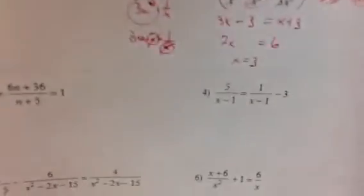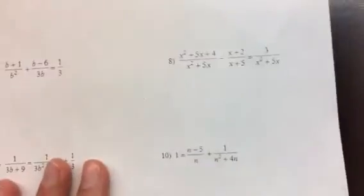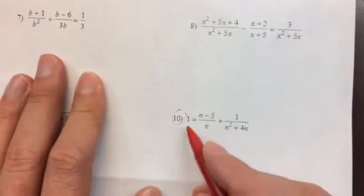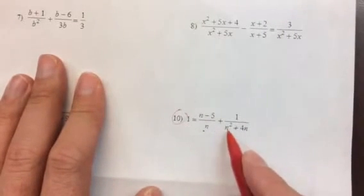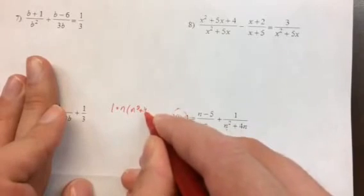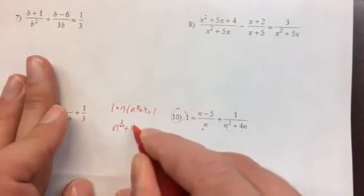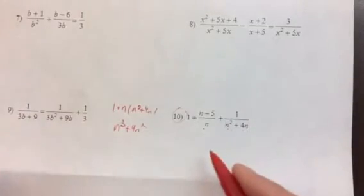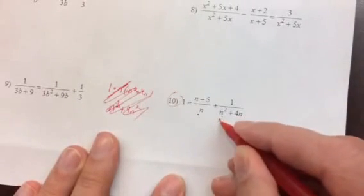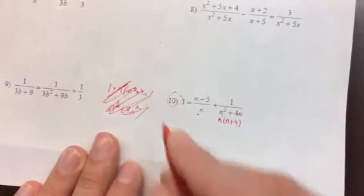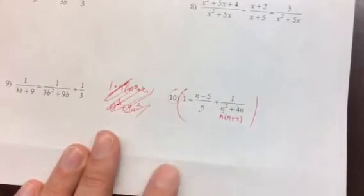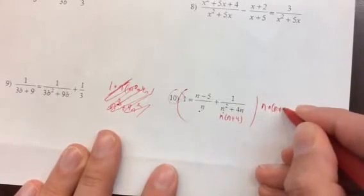Let's look at how that works on some problems where we might need to factor. Let's do number 10. What we don't want to do is multiply by n and n squared plus 4n, because we'd end up with a cubic. Solving a cubic equation is way harder than solving lower-level equations, so we want to be smarter. We're going to factor the denominator, and when we multiply by n times n plus 4, that'll already cancel out the dividing by n. So this is the least common denominator we need.